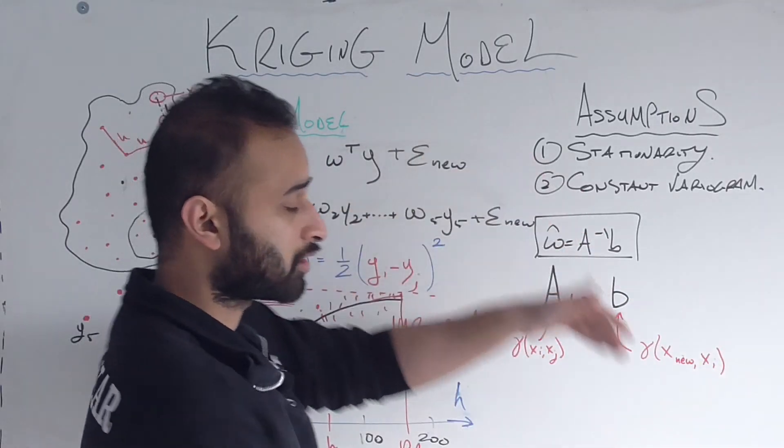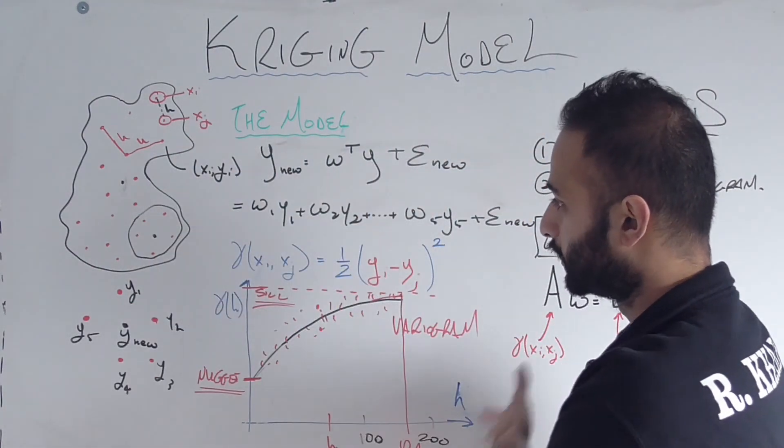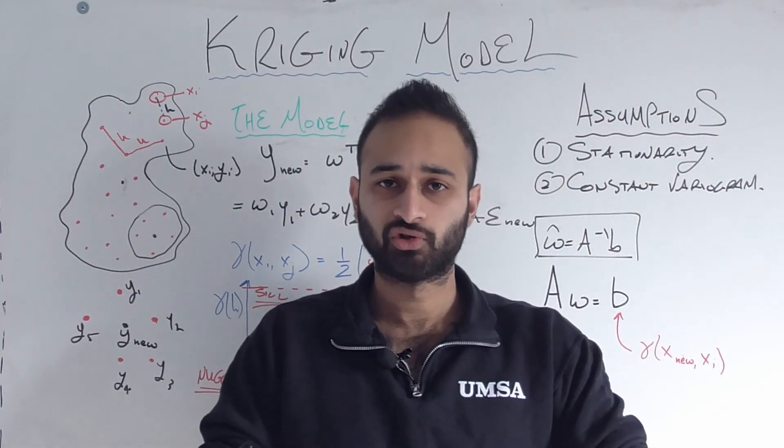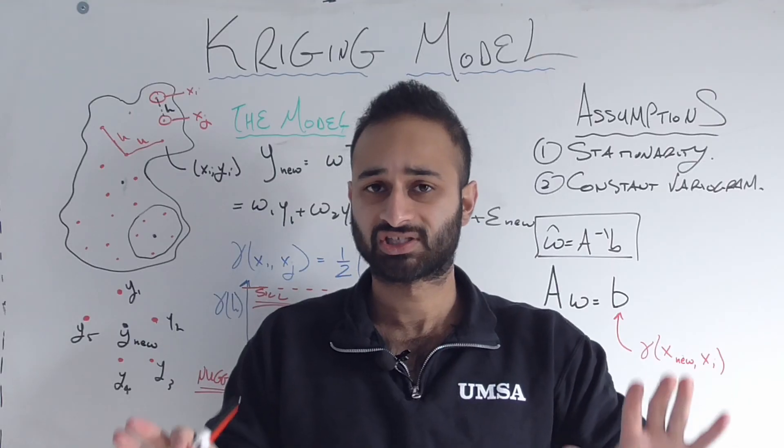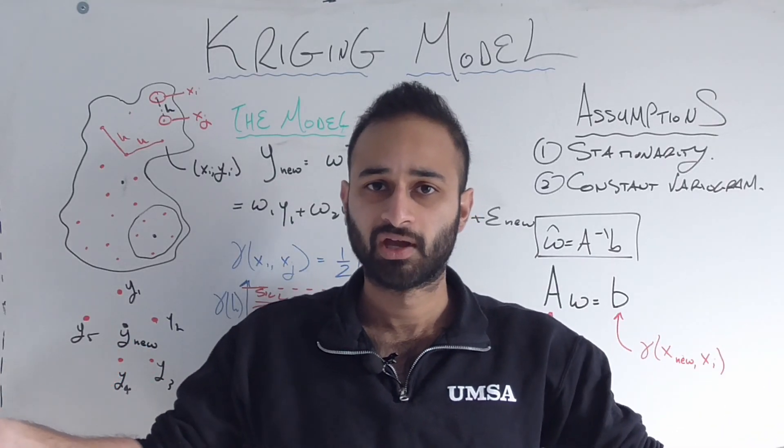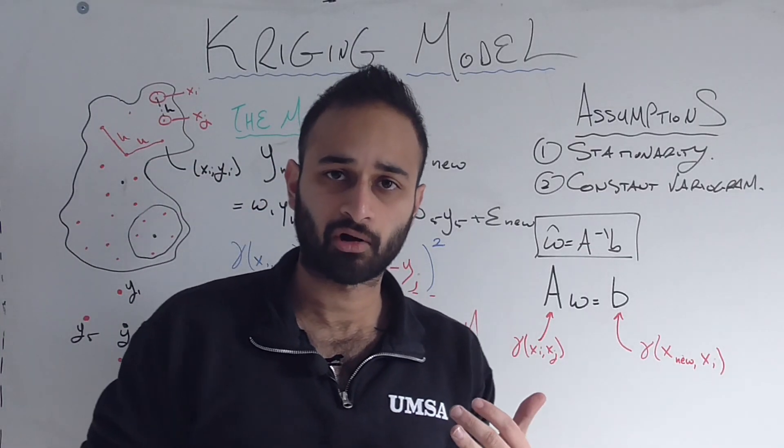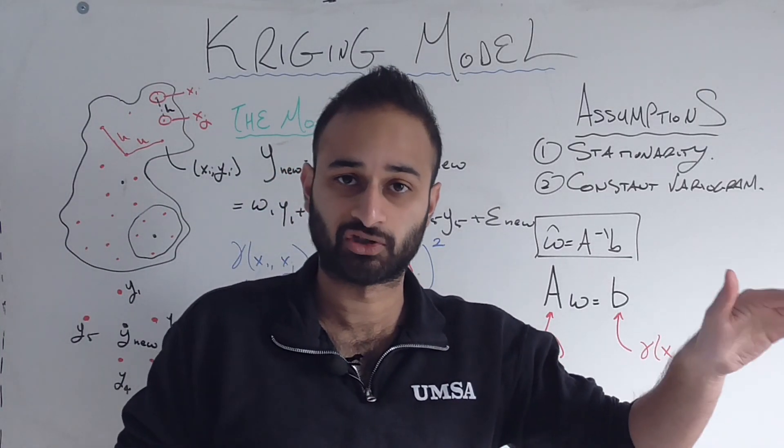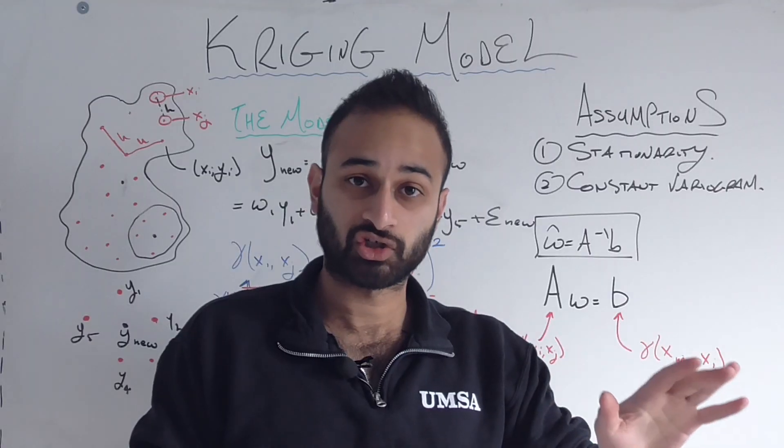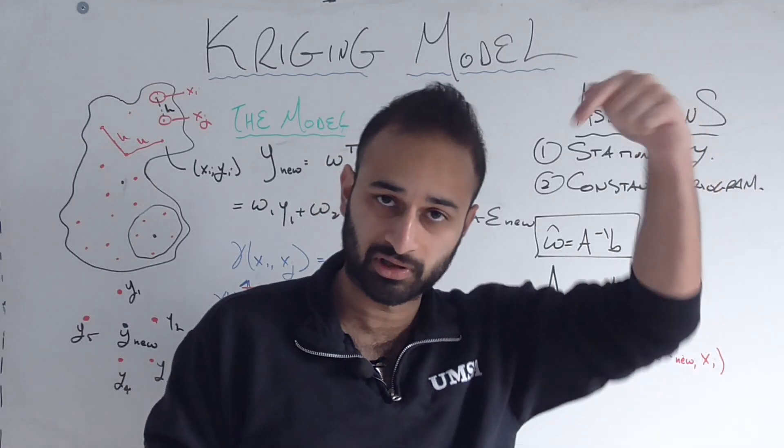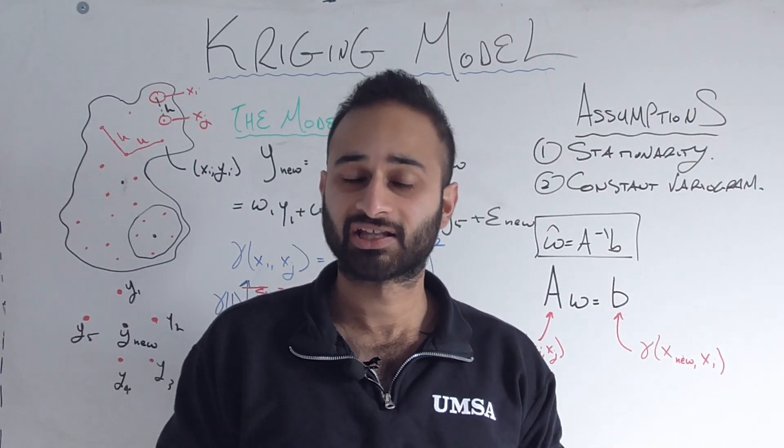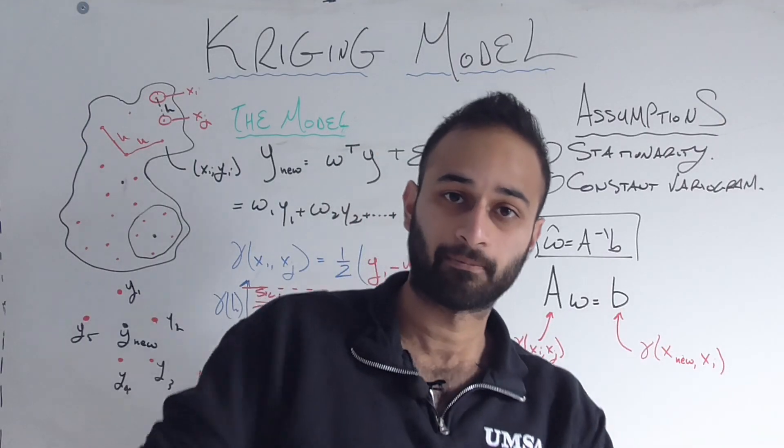These are the assumptions of the Kriging model, and this is the Kriging model itself. So hopefully that helped you to get a good gentle introduction into spatial stats and the Kriging model, especially the variogram, because that's something that's used not just in the Kriging model, but in a lot of areas of spatial stats. So again, if you have any questions, I will be happy to answer them. Just put them in the comments below. Go ahead and like and subscribe for more videos like this, and I'll see you next time.